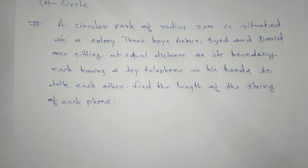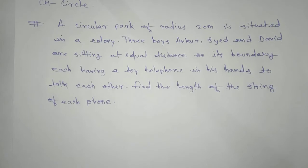Namaste students. Here we have one problem related to circle, class 9. A circular park of radius 20 meters is situated in a colony. Three boys — Ankur, Syed, and David — are sitting at equal distance on its boundary, each having toy telephones in hand to talk to each other. Find the length of the string of each phone.